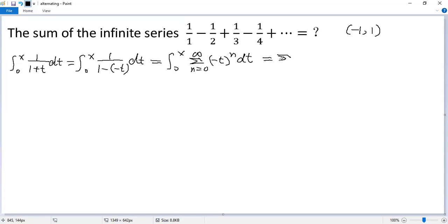So we get sigma n equals 0 to infinity, integrand 0 to x, negative t to the power n dt. We can take the factor negative 1 to the power n out. So we get sigma n equals 0 to infinity, negative 1 to the power n times 0 to x, t to the power n dt.